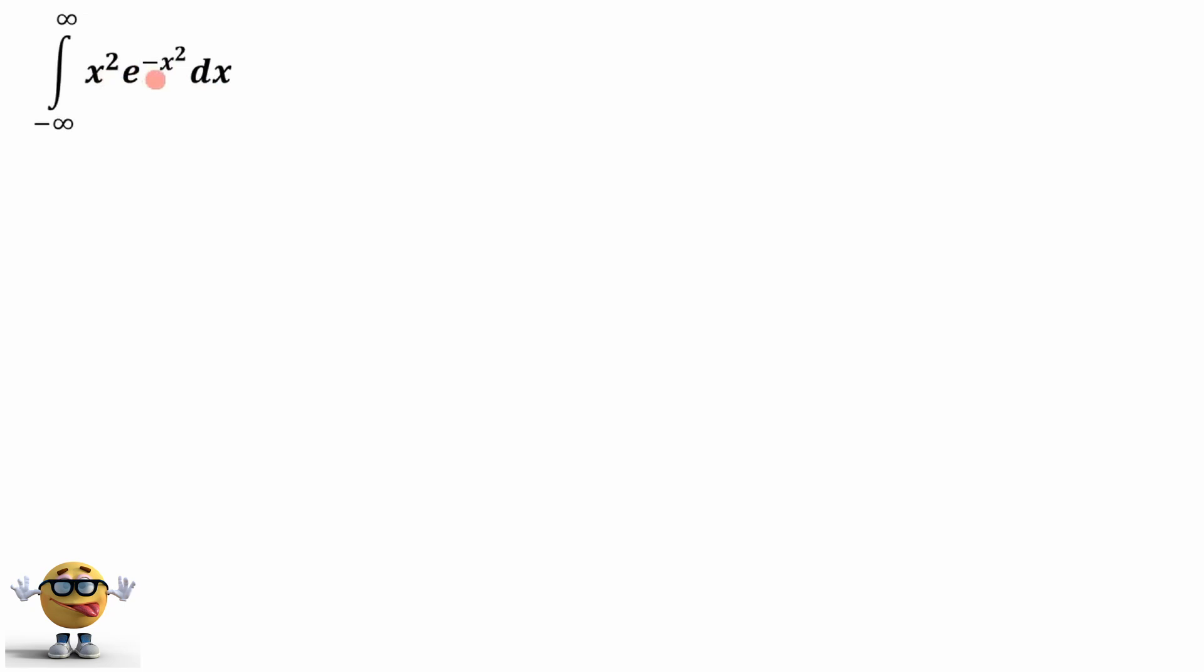We're going to evaluate this using integration by parts. But before we do that, we're going to split up the x squared into x times x, and I'm going to show you why we did that right away. To do integration by parts, it's in this format: the integral of u dv equals uv minus the integral of v du. We just need to find out what the u's, the v's, the du's, and dv's are.